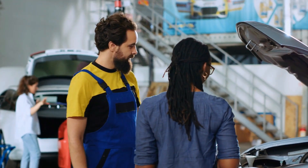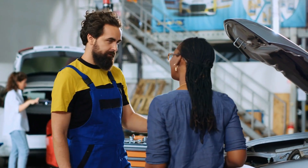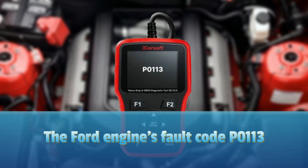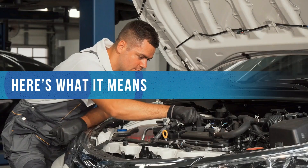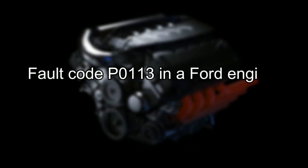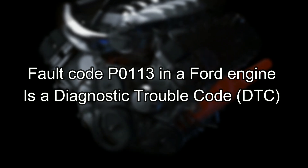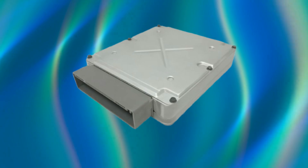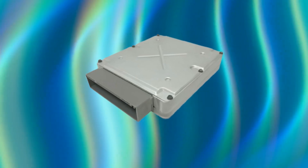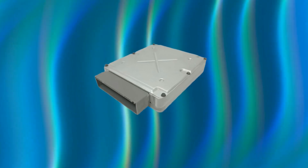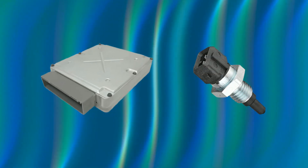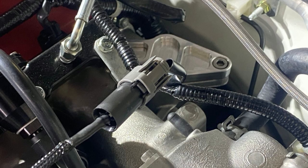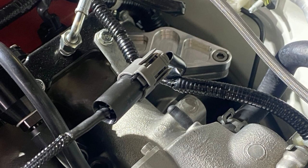Hey everyone, Scott here from Simple Mechanic Advice. Today we're going to look at the Ford engine's fault code P0113. Fault code P0113 in a Ford engine is a diagnostic trouble code (DTC) that the vehicle's onboard computer generates whenever it detects a voltage surge from the IAT sensor's relay. The fault code typically indicates a malfunction in the sensor or its associated circuits.